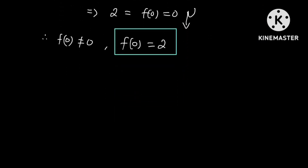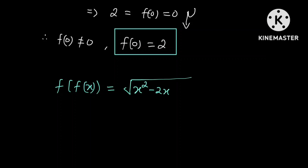So we are saying that if f of f of x is equal to the square root of x squared minus 2x plus 4, then f of 0 will be equal to 2. Thanks for watching.